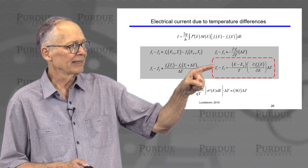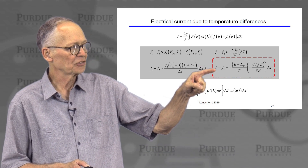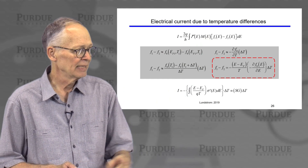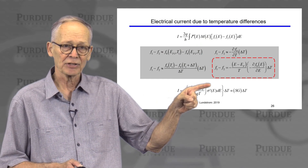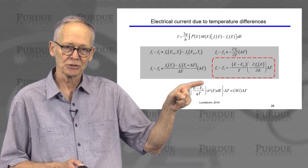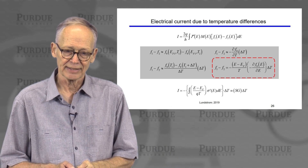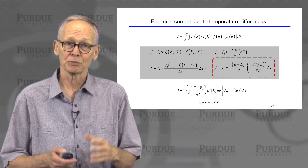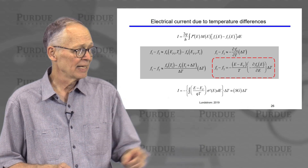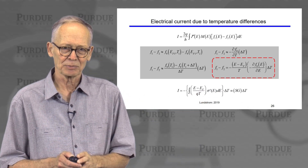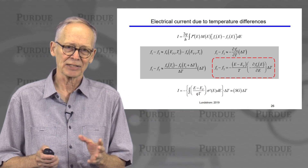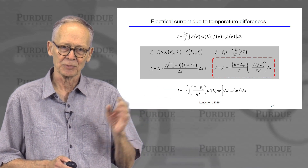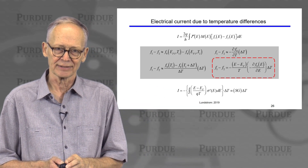We can plug that approximation for F1 minus F2 into the Landauer expression, and now we have an expression for the current due to a temperature difference across the device. What we find is that the current is proportional to the temperature difference. The constant of proportionality is the product of the Seebeck coefficient times the electrical conductance.